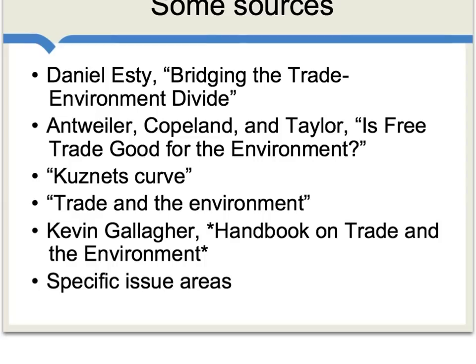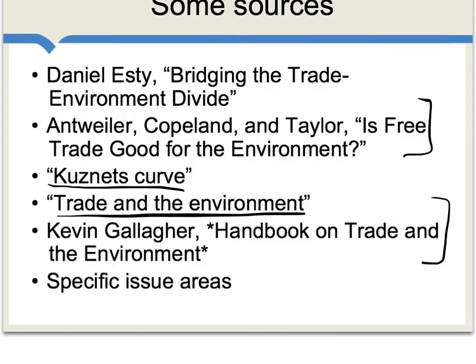There's a large amount of reading you can do on this topic. A good survey article is Daniel Esty's 'Bridging the Trade Environment Divide,' available online. There's also a good journal article called 'Is Free Trade Good for the Environment?' You can Google the phrase 'Kuznets Curve' for many useful readings, or simply 'Trade and the Environment.' If you'd like a book, key readings are collected in the Handbook on Trade in the Environment. Because this is such a complex and diverse area, I recommend Googling specific issue areas you may be interested in.